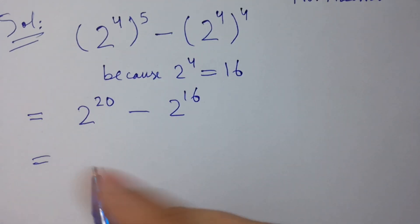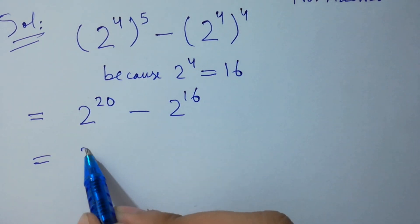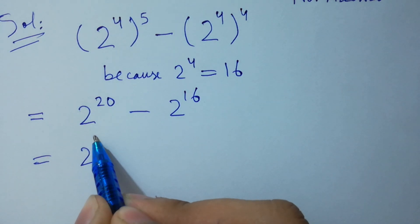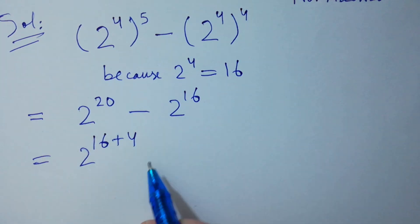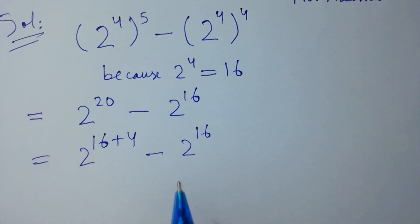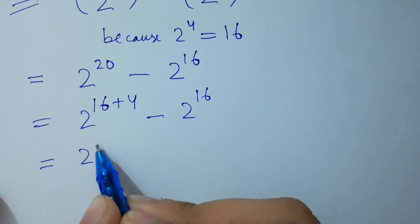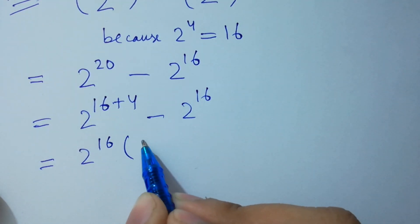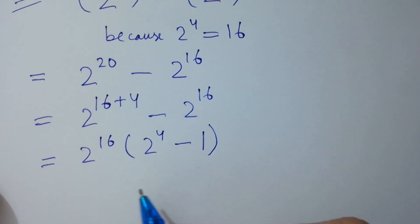Here, take common 2 to the power 16. We can write here 2 to the power 16 plus 4, which is 20, minus 2 to the power 16 as it is. Common 2 to the power 16, we have 2 to the power 4 minus 1.